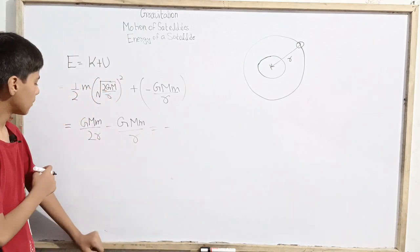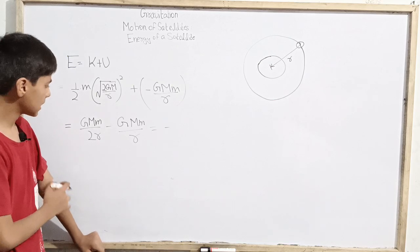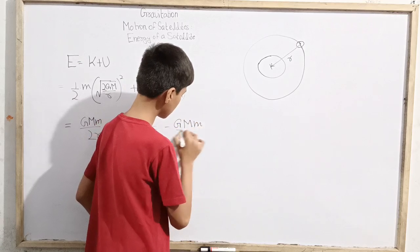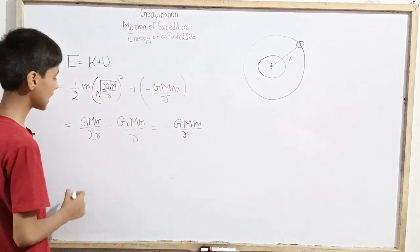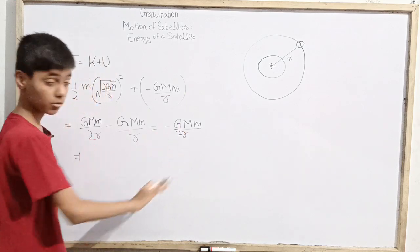Here we take GMm common and this is 1 over 2R minus 1 over R. So this somehow becomes minus GMm over 2R. That's it. Sorry, here will be also a 2.